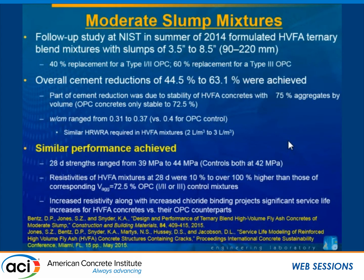The previous concretes targeted a minimum slump of one inch for paving applications. We also produced higher-slump versions by adjusting the high-range water reducer dosage. We were also able to further increase cement replacement by increasing aggregate content, because the limestone stabilized the paste so segregation didn't become a problem — whereas our control concrete at that aggregate content had quite a bit of segregation. Our control strength of about 42 MPa fell right in between what we achieved with these moderate-slump limestone-containing concretes.